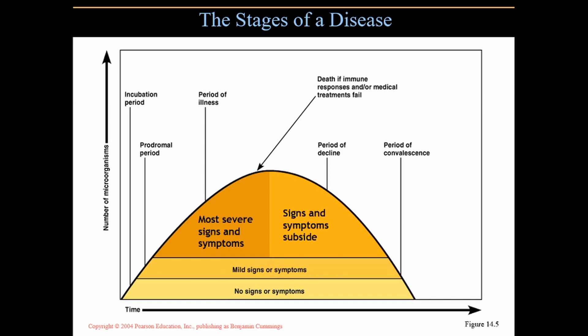Then comes the prodromal period, where you have mild signs or symptoms — maybe some aches and pains, feeling a bit worn down and weak. Then the period of illness, with the most severe signs and symptoms — now you'll have fever, vomiting, or whatever the pathogen causes, whether it's a respiratory or intestinal issue.